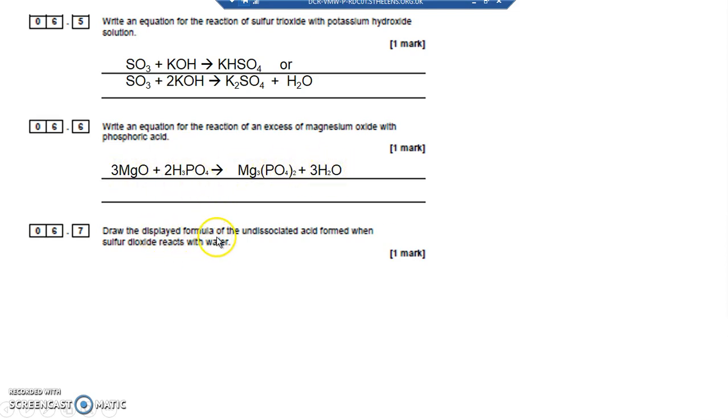Draw the displayed formula of the undissociated acid when sulfur trioxide reacts with water. So you've got SO3 and H2O. SO3 and H2O is going to make H2SO3 - not sulfuric acid, but something called sulfurous acid. And it looks like that. Sulfuric acid looks like that - you'll probably know that from paper 2, from your organic reactions, your electrophilic addition. And SO3 looks...